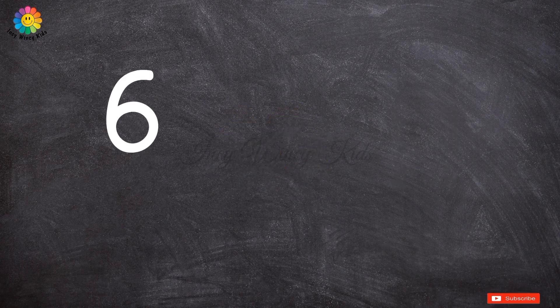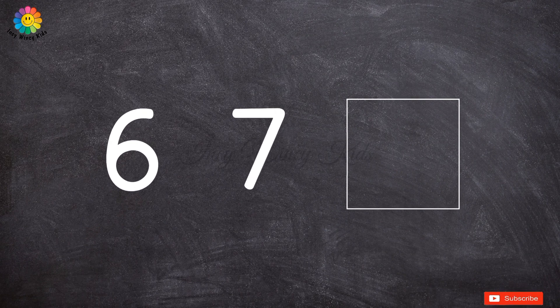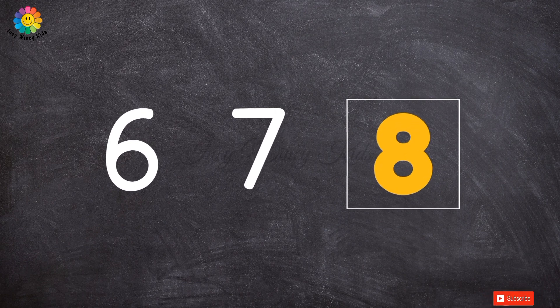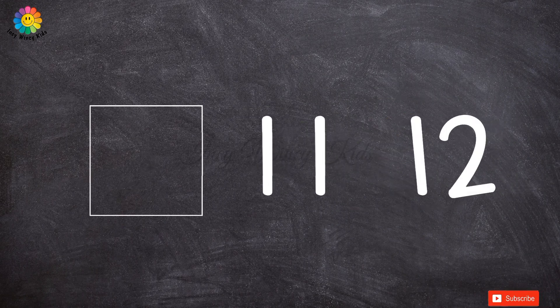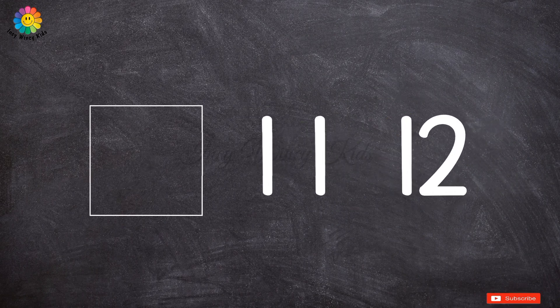6, 7 — what comes after 7? The answer is 8. 6, 7, 8. What comes before 11?